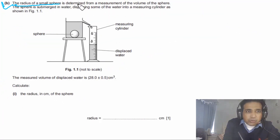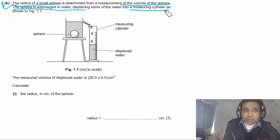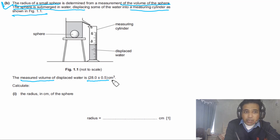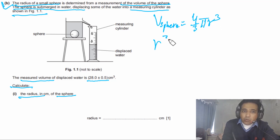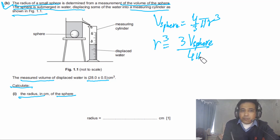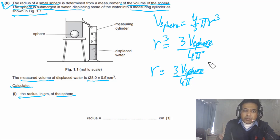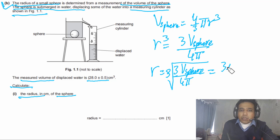Part b: the radius of a small sphere is determined from a measurement of its volume. The sphere is submerged in water, displacing water into a measuring cylinder. The measured volume of displaced water is 28.0 ± 0.5 cm³. To calculate the radius, we use the volume of a sphere formula: V = (4/3)πr³, rearranging to r = cube root of (3V / 4π).